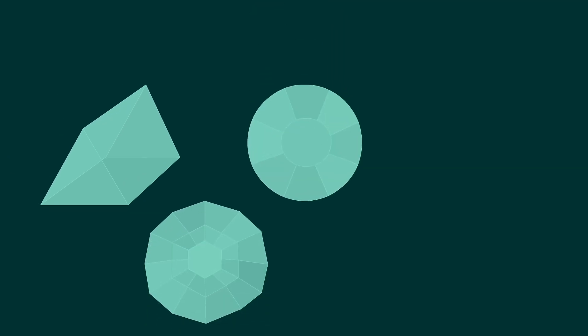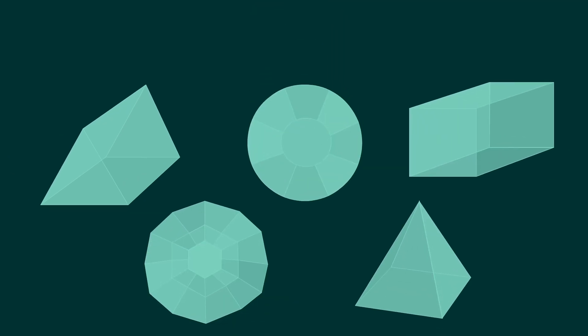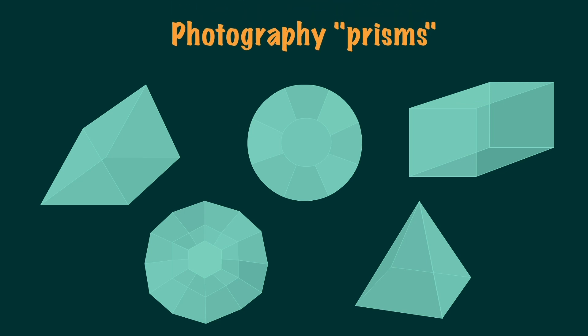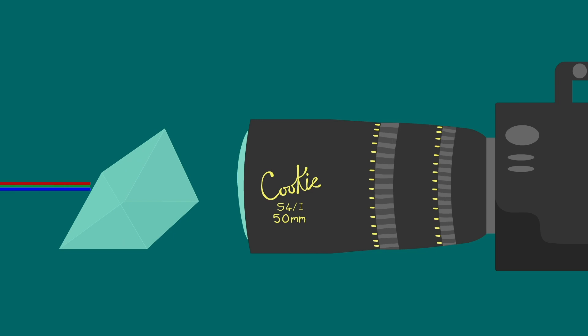Interestingly though, some glass elements are used exactly for their high-dispersion qualities, such as prisms. Prisms are pieces of glass that you place in front of the lens for cool fragmented effects, such as these.